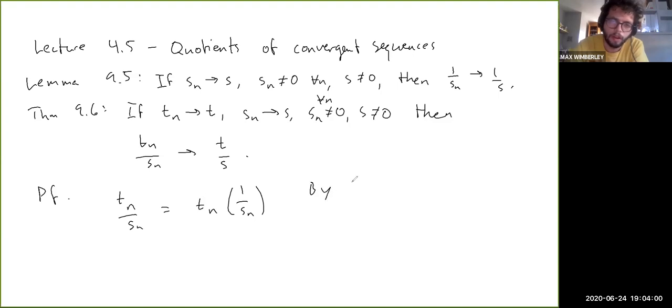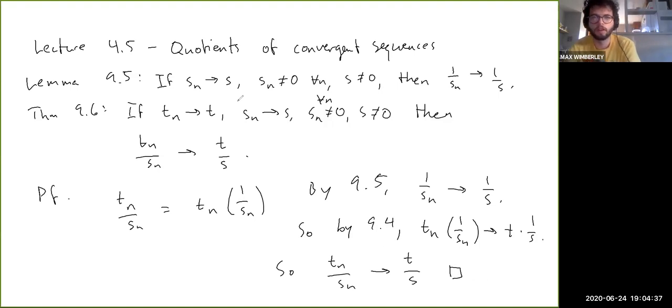By 9.5, 1 over Sn converges to 1 over S, so by 9.4, the product theorem, Tn times 1 over Sn approaches T times 1 over S. So that's it. There you have it, that's the quotients.